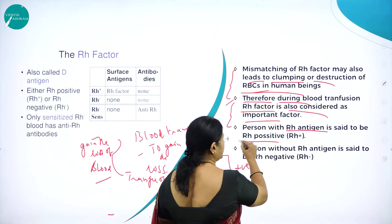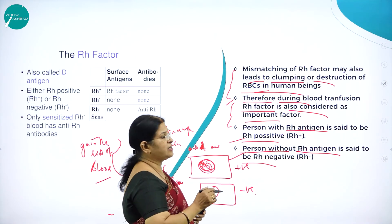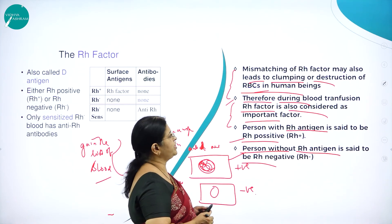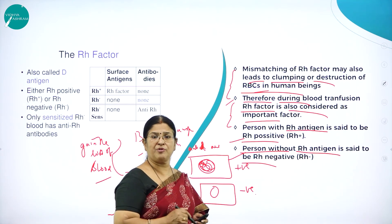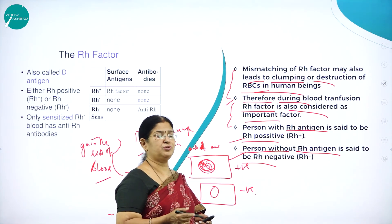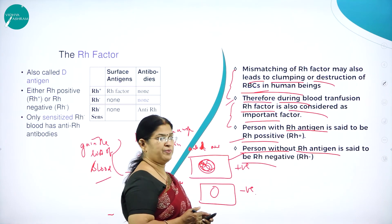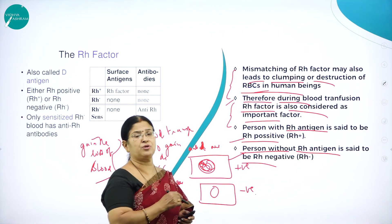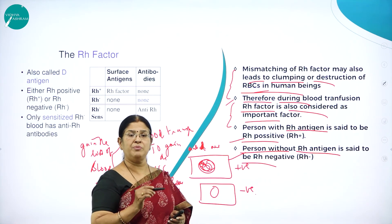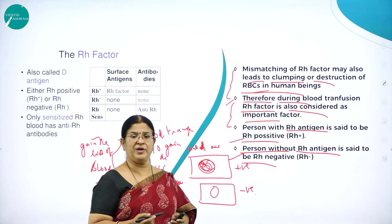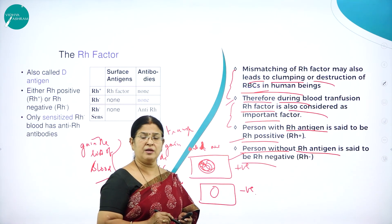Person with RH antigen is said to be RH positive, and person without RH antigen is said to be RH negative. Mismatching of RH factor may also lead to clumping or destruction of RBCs. Therefore, during blood transfusion, RH factor should also be considered. It is mandatory that each person should know their blood group, as we do not know when we will be in need of blood.